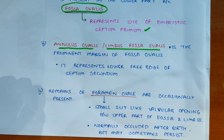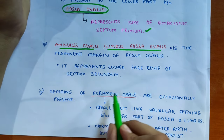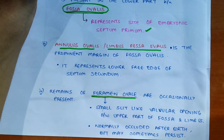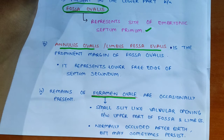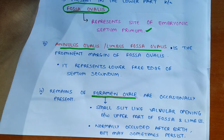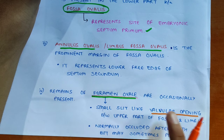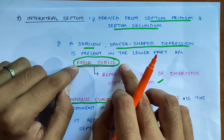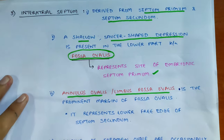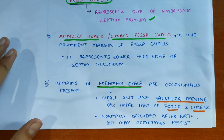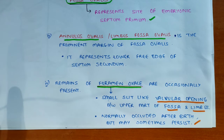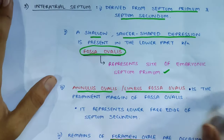The remains of the foramen ovale are occasionally present. In embryonic life, a foramen was present. Normally it is occluded after birth, but it can persist sometimes. This is a small slit-like valvular opening between the upper part of the fossa ovalis and the limbus fossa ovalis, which is the site of the former foramen ovale.